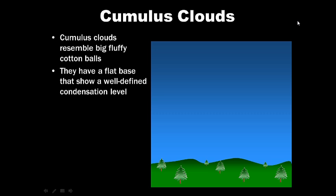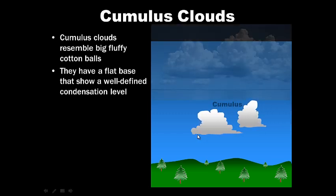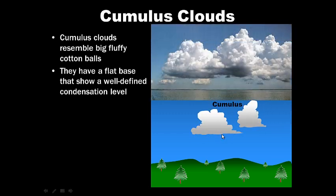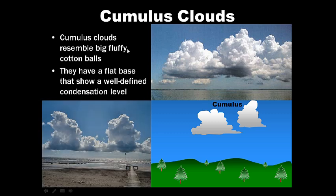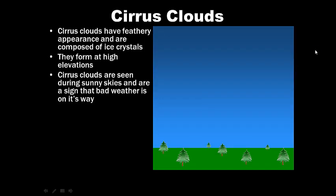Cumulus clouds resemble big, fluffy cotton balls. Those are those ones that are appealing to the eye. They look very pretty, if you will. They have a flat base. This flat base is the temperature, is the dew point temperature here. As air rises, it cools, and it hits that dew point temperature, and we get condensation. So, there are some cumulus clouds. Big, fluffy ones, with flat bases. Those are cumulus clouds.